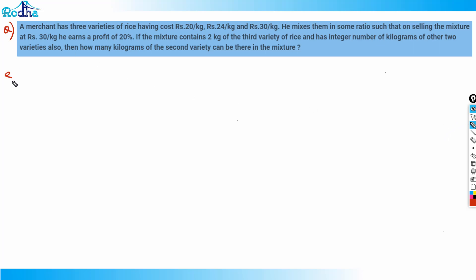Hi guys, next question. A merchant has three varieties of rice having cost rupees 20 per kg, rupees 24 per kg, and rupees 30 per kg. He mixes them in some ratio such that on selling the mixture at rupees 30 per kg,